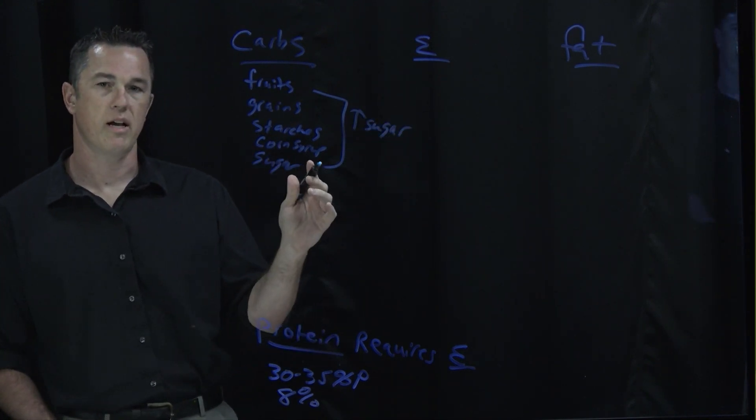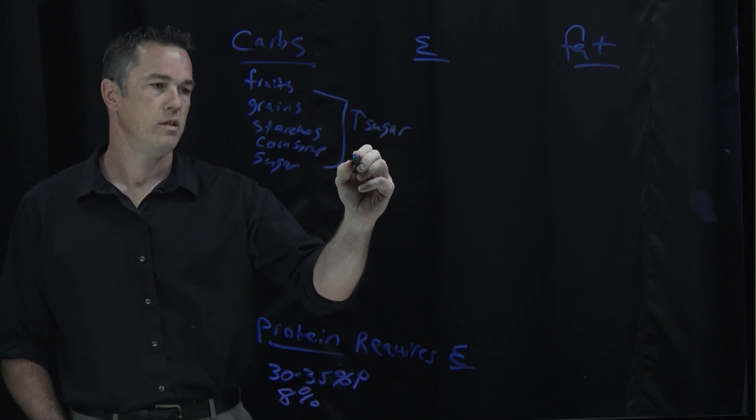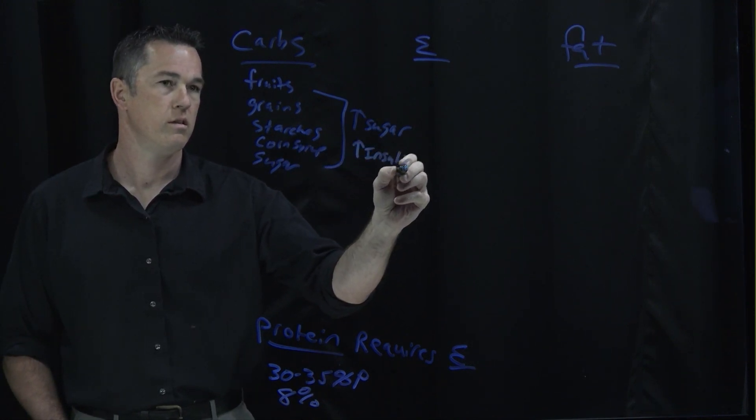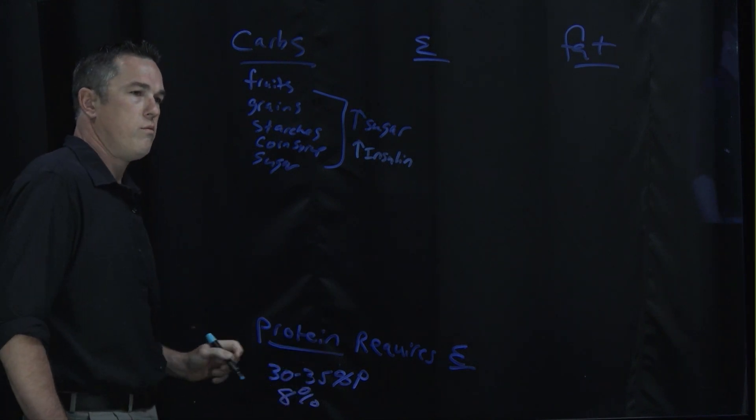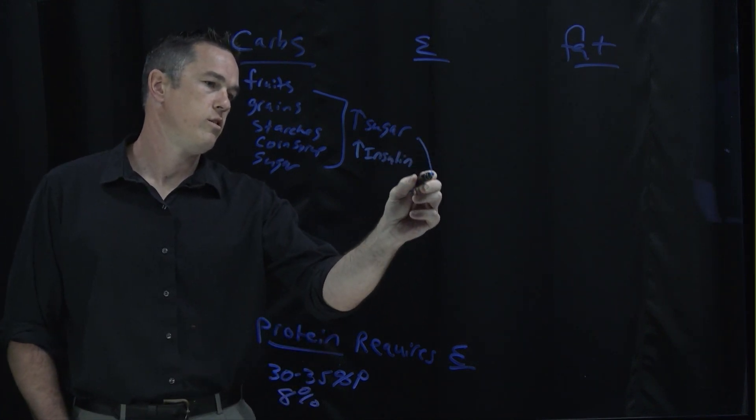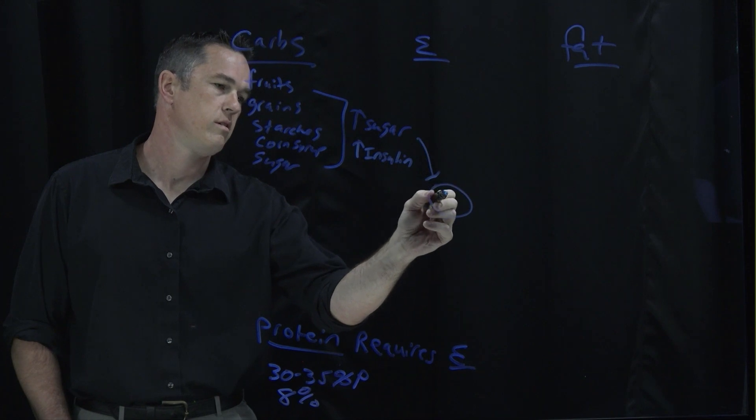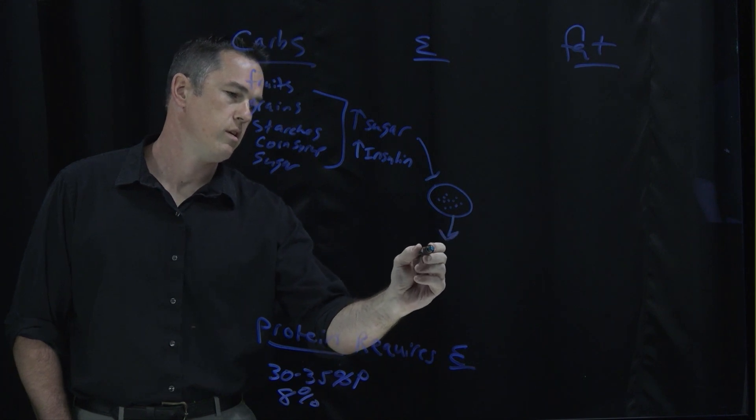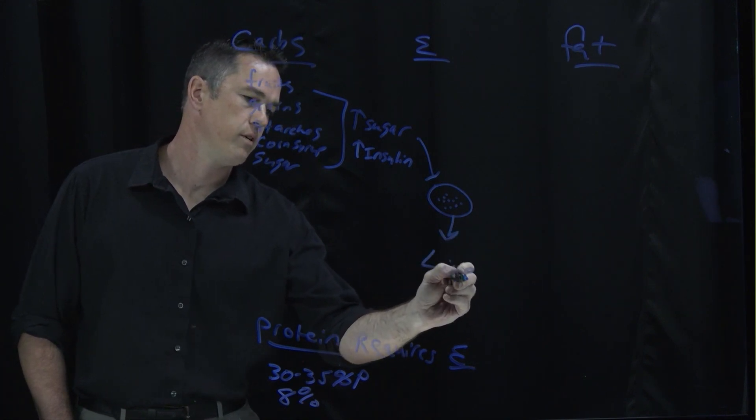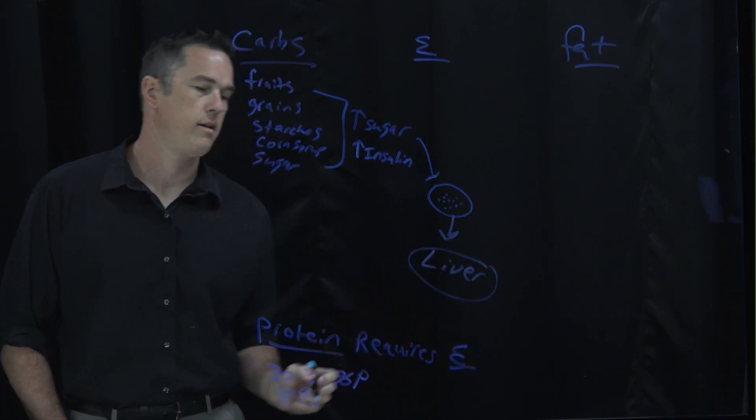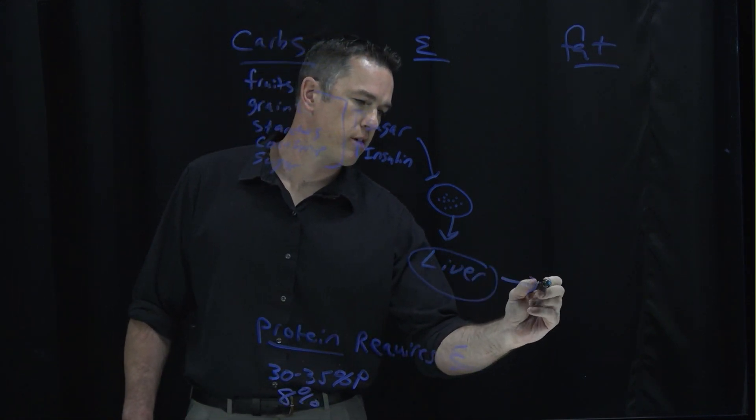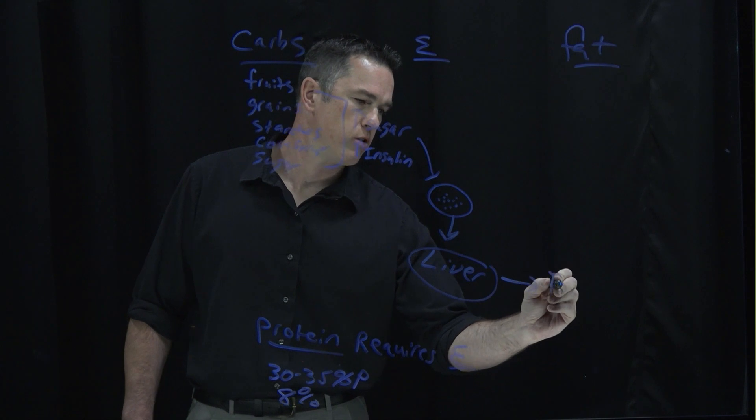And your body recognizes that and sends out a signal and a hormone called insulin. Insulin will then tell the sugar to go to your cells where it's used as energy. And then the leftover will go to your liver. In the liver, this excess glucose or sugar is turned into triglycerides.